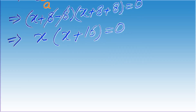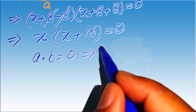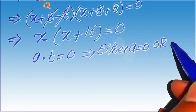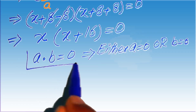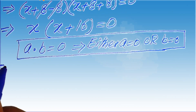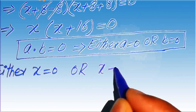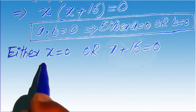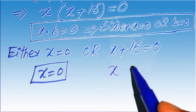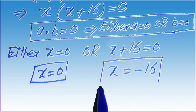We apply the zero product rule: if a times b equals 0, then either a equals 0 or b equals 0. Applying this rule, either x equals 0, or x plus 16 equals 0. The first root is x equals 0, and moving 16 to the right-hand side gives the second root x equals minus 16.